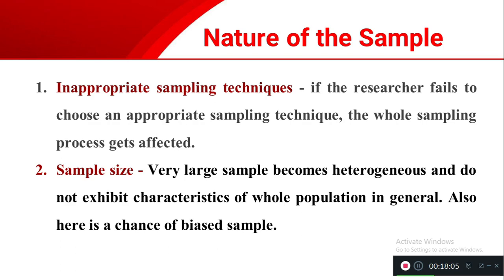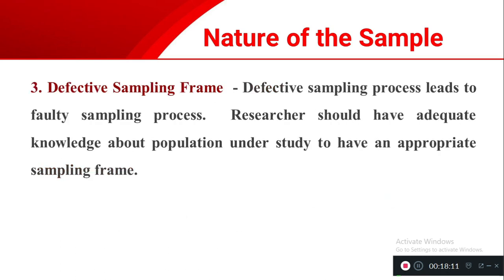A defective sampling frame arises when you don't have good knowledge about the population or adequate cooperation with them, making it impossible to construct a good sampling frame. Inadequate information about the sample means the researcher cannot collect data properly, and as a result the study findings will be affected.